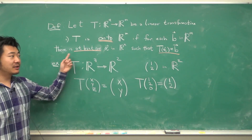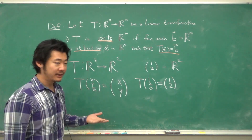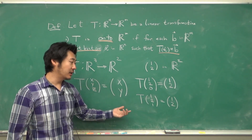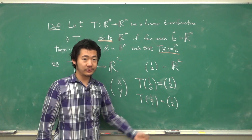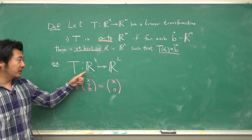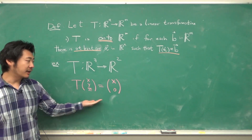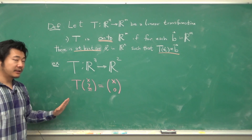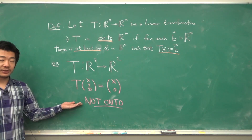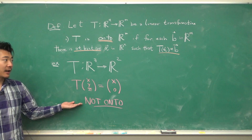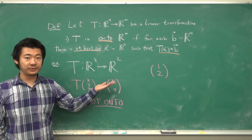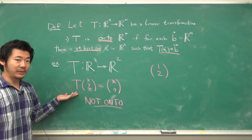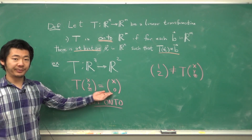There needs to be at least one X — there could be multiple. For instance, T of (1, 2, 1) is also (1, 2). If we change the transformation to T of XYZ equals (X, 0), then this is not an onto transformation, because if we take a vector like (1, 2) in R2, there are no vectors that map to it, since the second component must always be 0.